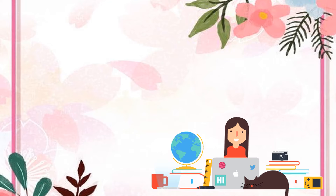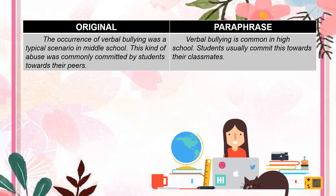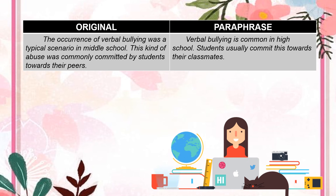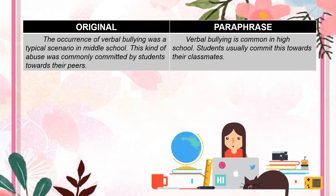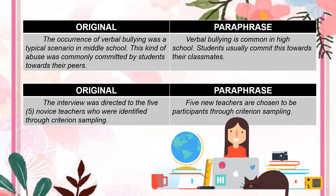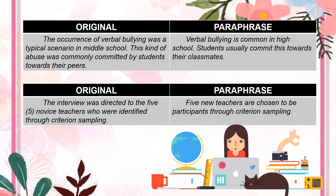Let us paraphrase this example. Original: 'The occurrence of verbal bullying was a typical scenario in middle school. This kind of abuse was commonly committed by students towards their peers.' Paraphrase: 'Verbal bullying is common in high school. Students usually commit this towards their classmates.' Another example. Original: 'The interview was directed to the five novice teachers who were identified through criterion sampling.' Paraphrase: 'Five new teachers are chosen to be participants through criterion sampling.'